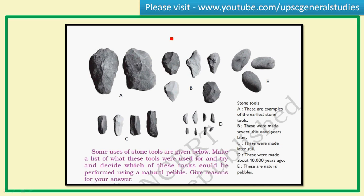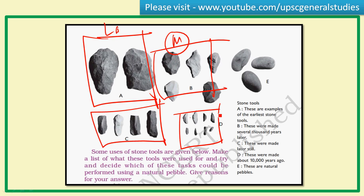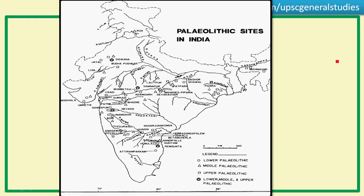Looking at the stone tools, the Lower Paleolithic tools — hand axes and cleavers — are the crudest. Tools developed through the Middle Paleolithic period, and by the Upper Paleolithic period you can observe a consistent decrease in size along with an increase in refinement, efficiency, and accuracy. The microliths developed in the Mesolithic period. On the sites map, circles represent Lower Paleolithic, triangles Middle, and squares Upper Paleolithic sites.